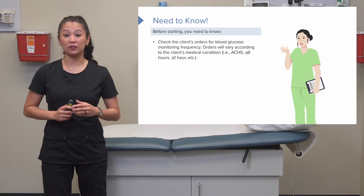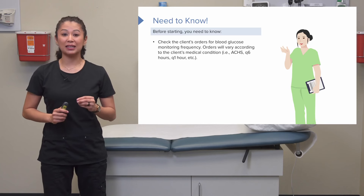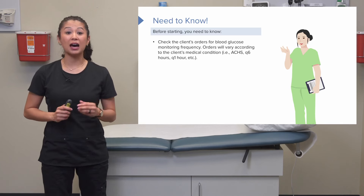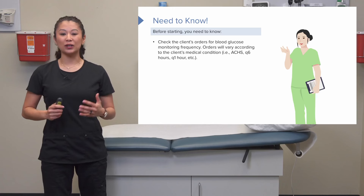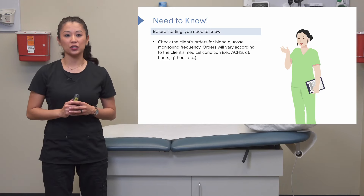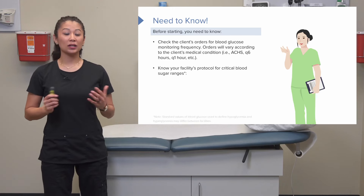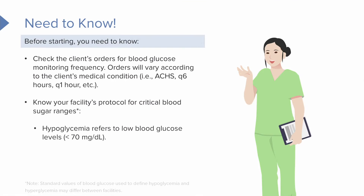In some higher levels of care, like the intensive care unit, we may take this level a lot more often. When we're talking about a blood glucose level, it's important to know the really critical ranges — specifically your facility's protocol for what we call hypo, meaning low, and hyper, meaning high, glycemia. So a high and low blood sugar.